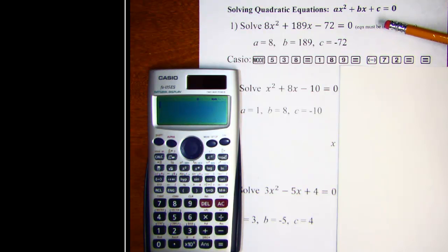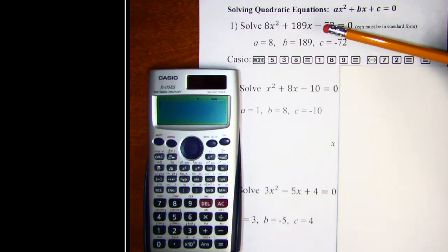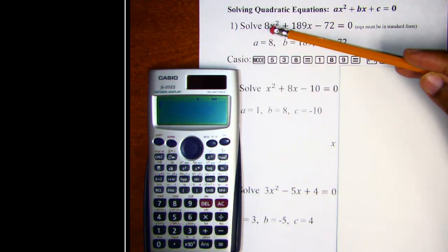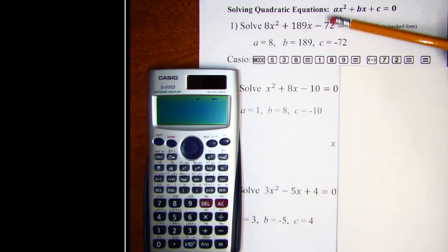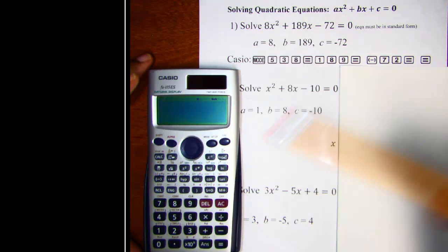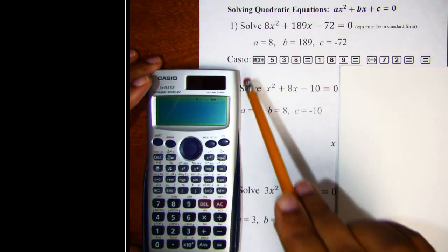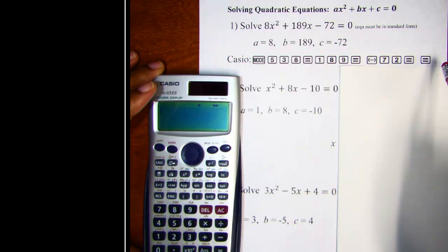Alright, so let's take a look at problem number one. Solve 8x² plus 189x minus 72 equals zero. As we can see the equation is in this form. So I have identified A, B, and C. A is the coefficient or the number in front of x squared. B is the coefficient of x including the sign so positive 189. And C is the constant term including the sign so negative 72. Keep in mind that the buttons I'll select over here on the Casio are listed here on the paper.